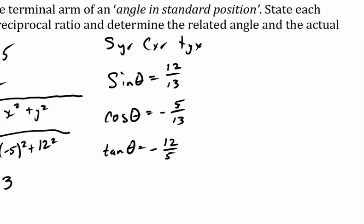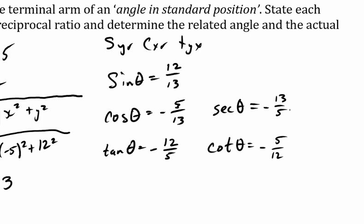What are my reciprocal ratios? Cotangent is just the reciprocal of tangent, so I flip it: negative 5 over 12. I don't try to memorize a different formula — I just think about what tangent is and flip it. Secant goes with cosine, so it's the reciprocal of cosine: negative 13 over 5. And cosecant — CSC — is 13 over 12.